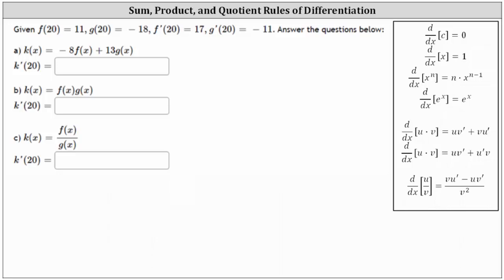We're given the following function values and asked to answer the following questions. First, we are given k of x equals negative eight f of x plus 13 g of x, and we're asked to determine k prime of 20.